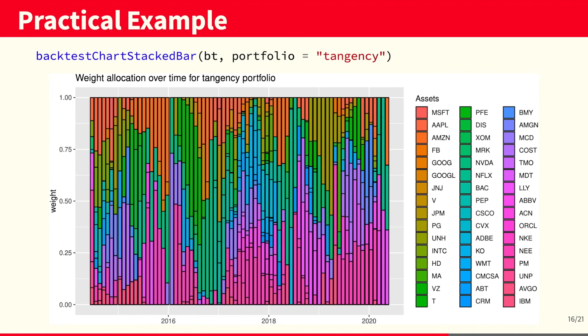In this chart, we see the tangency weights over time. As we can observe, the portfolio looks pretty chaotic over time, which could be a problem because we would waste a lot of money paying transaction costs.